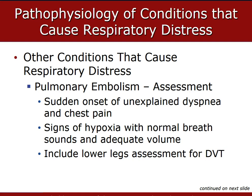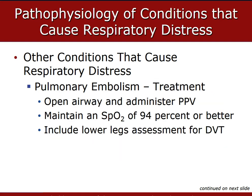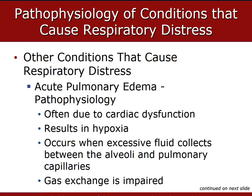Distended neck veins or JVD is also a late sign. Crackles, fever, decreased SpO2 under 94, and signs of complete circulatory collapse may be present. Monitor the patient for signs of respiratory failure, respiratory arrest, hypotension, poor perfusion, or cardiac arrest, and immediately transport your patient.